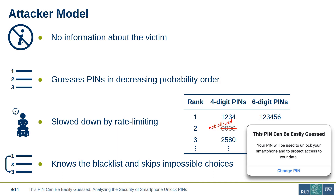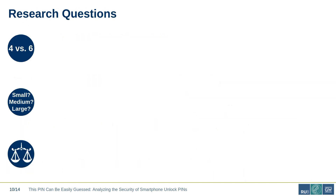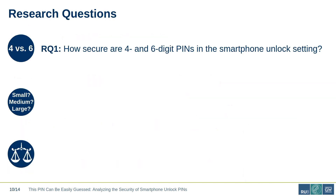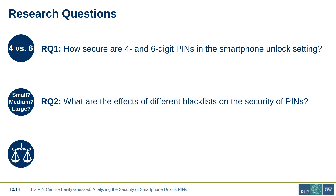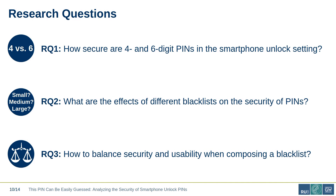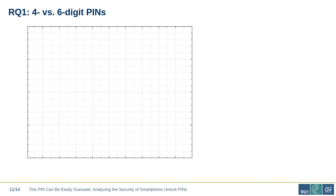Before showing the results, let's quickly recap the three research questions. First, we want to compare the security of four and six-digit PINs in the smartphone unlock setting with rate limiting in place. Second, we want to see to what extent different blacklists increase the security of PINs. Third, we want to include the user's perspective and see how to balance the need for security and usability when composing a blacklist. First things first: the security of four and six-digit PINs.